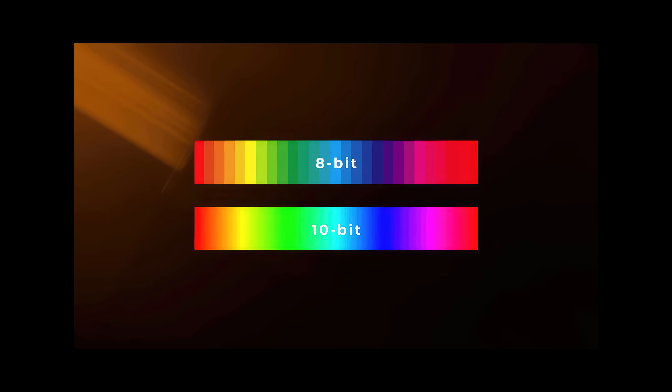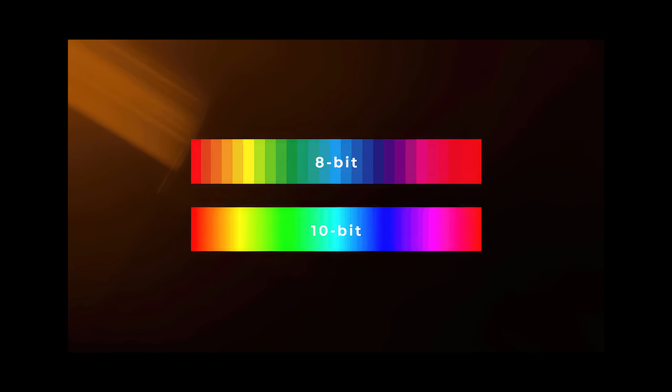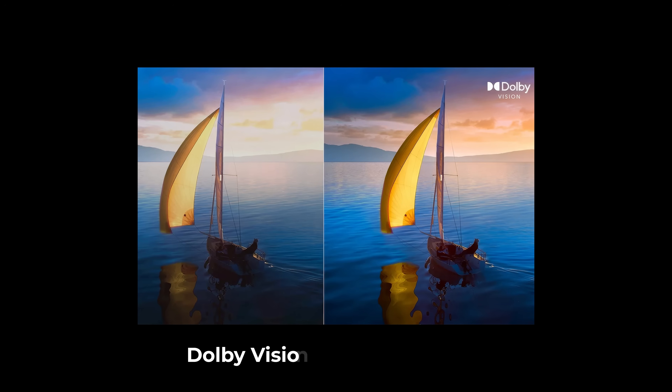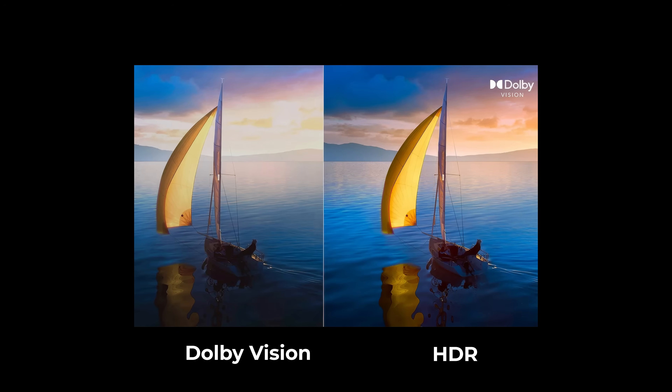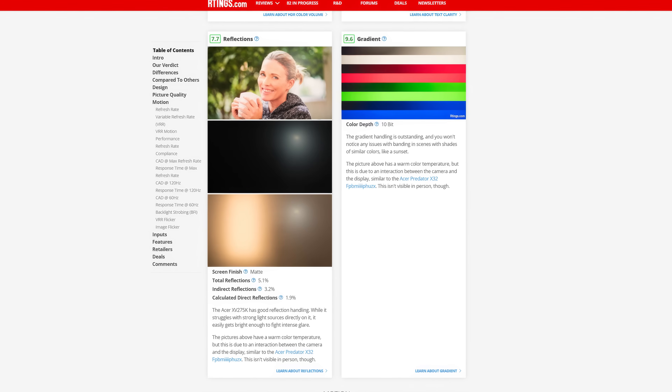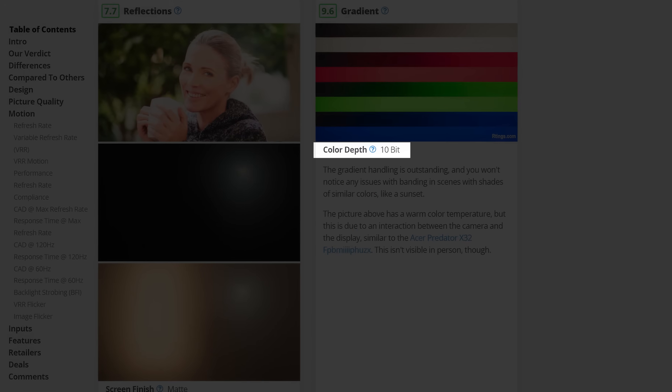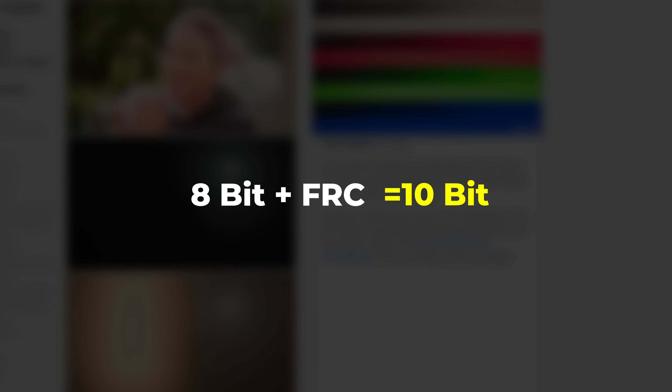Now let's move on to color bit depth. Color bit depth specifies the total number of colors your monitor can display — the higher it is, the better. If the content you watch supports features such as Dolby Vision or HDR, this allows you to get a more accurate image. It is specified in monitor specs with values such as 8-bit or 10-bit. You may also see values such as 8-bit plus FRC, meaning the monitor is actually 8-bit but with FRC technology can approach 10-bit depth. It will not match a real 10-bit monitor, but it is much more affordable.